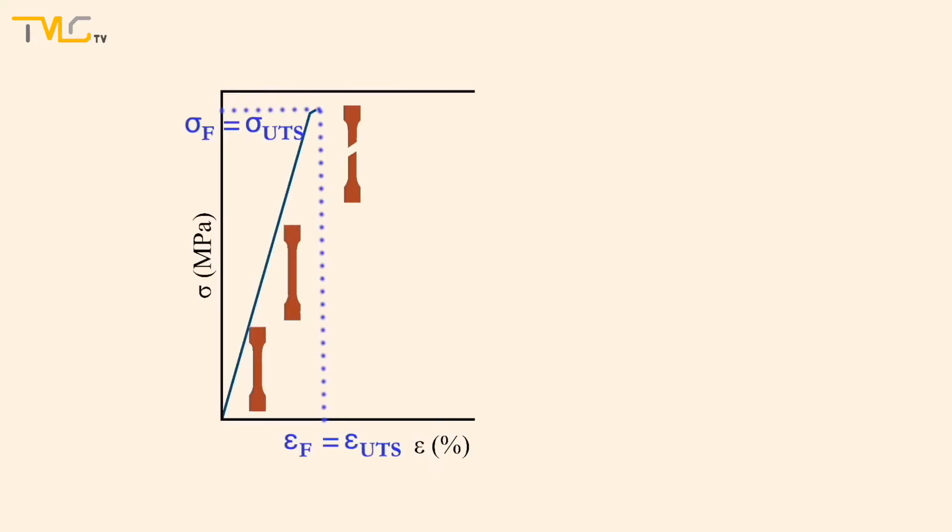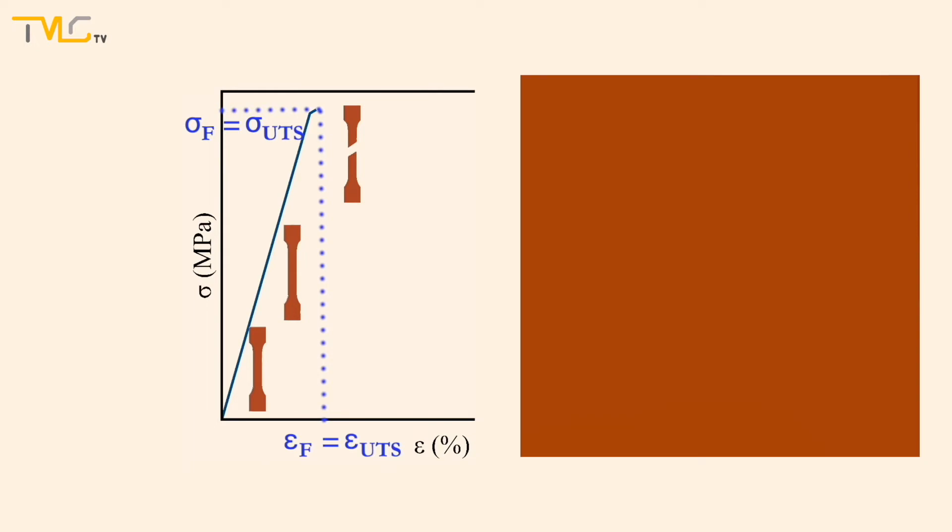On the other hand, some cracks may propagate very fast and not have a lot of plastic deformation. Hence, they are unstable, and once they form, they continue propagating even if the applied load is not increased, and eventually but rapidly, material fractures. This type of fracture is called brittle fracture.